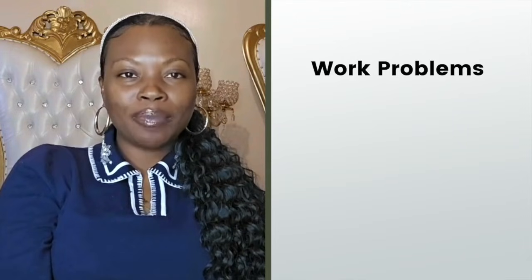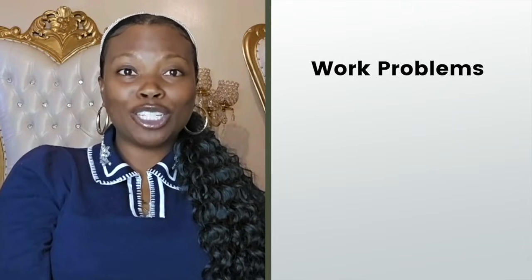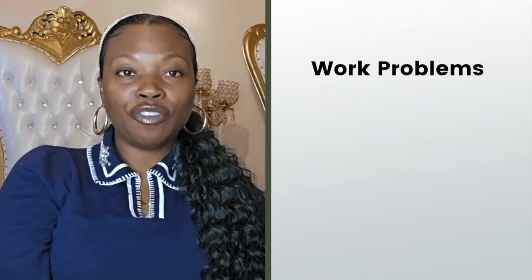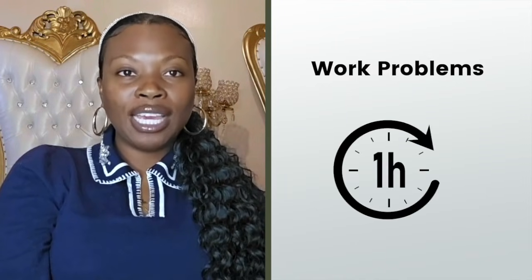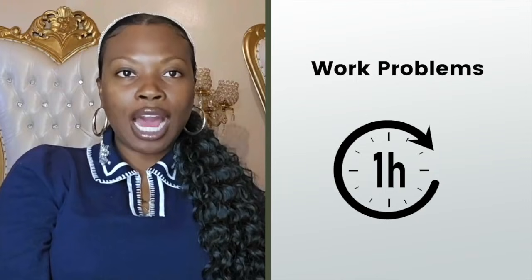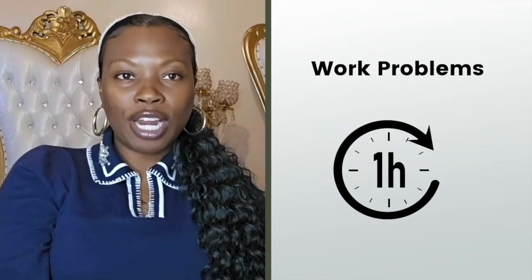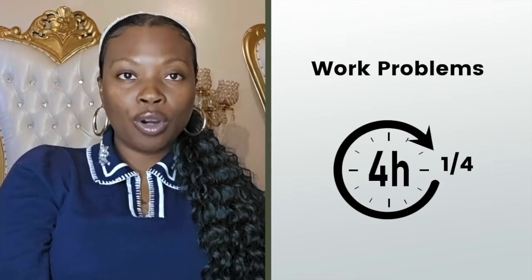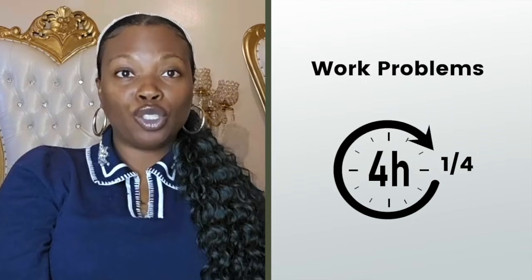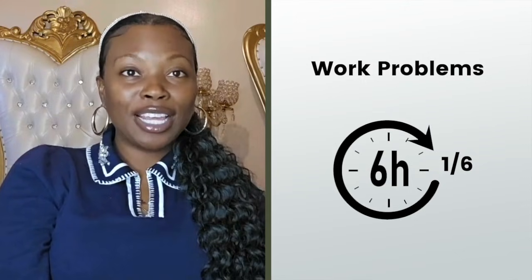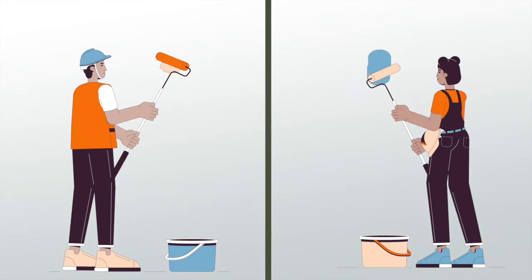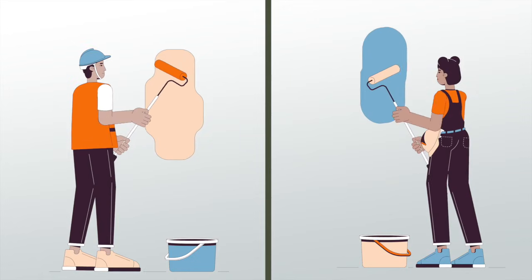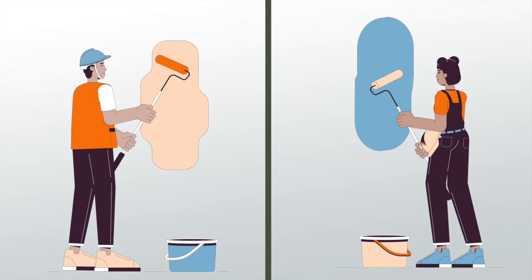Time for work problems. These are the ones that ask how long it takes two people or two machines to finish a job together. They look tough, but the steps are always the same. The key idea is that work rate is how much of the job gets done in one hour. If a job takes four hours, then in one hour you finish one-fourth of it. If a job takes six hours, then in one hour you finish one-sixth. Now let's do an example: if one person can paint a wall in four hours and another can do it in six, how long if they work together?